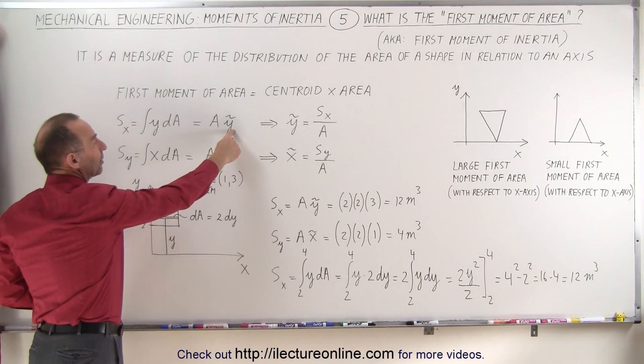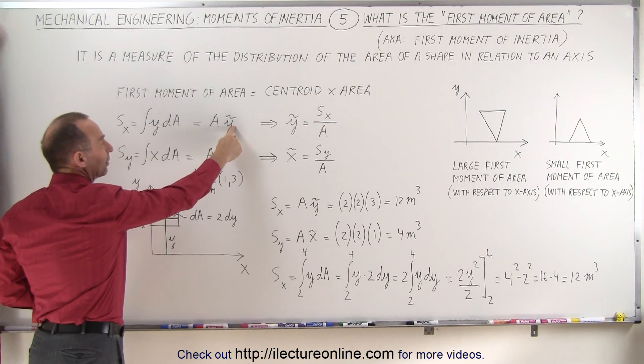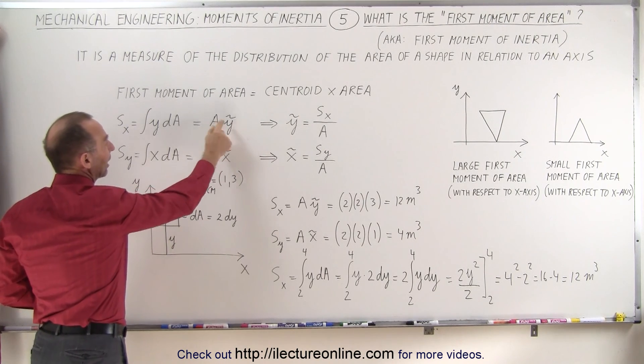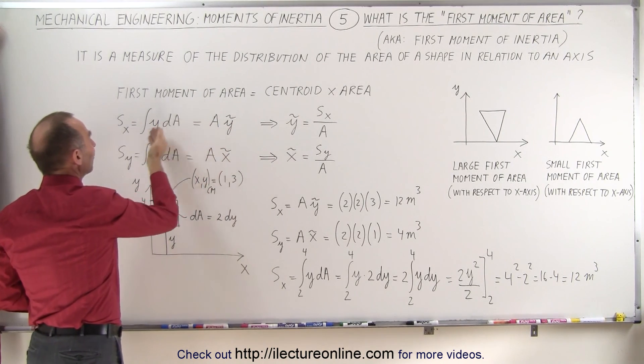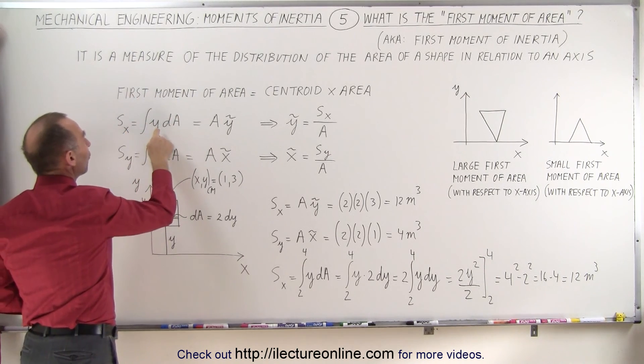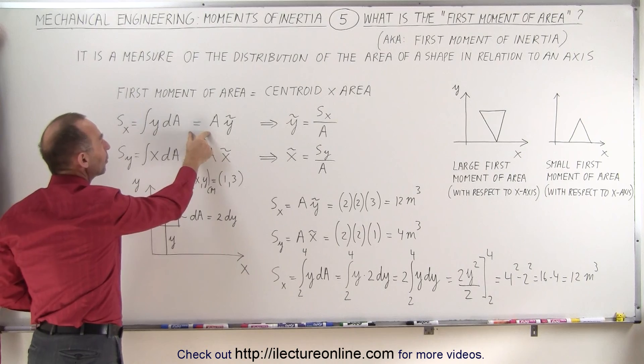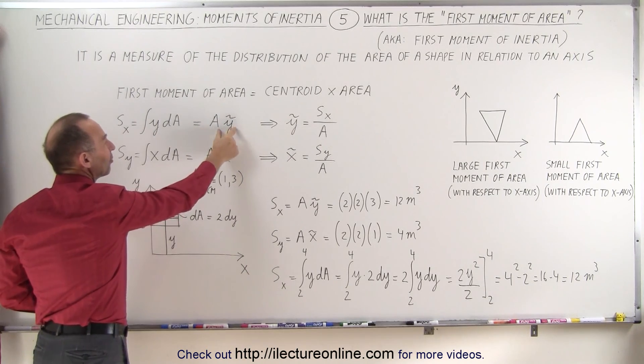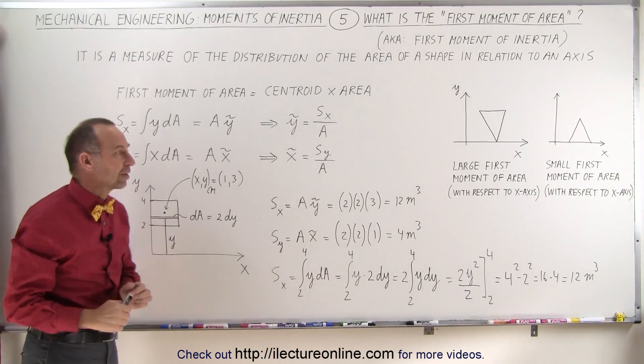Since this would be the distance to the centroid from the x-axis and this is the area, we can define that the first moment of area is equal to the integral of y times dA, which is then equal to the area times the distance of the centroid from the x-axis.